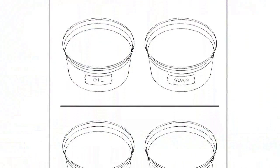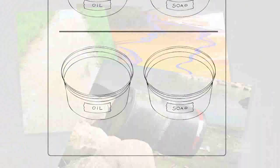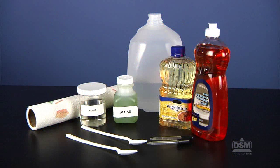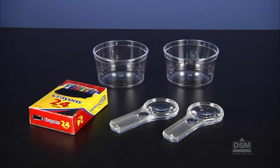To prepare for Session 1, make a copy of Activity Sheet 11 for each student. Cut out pictures of water pollution from magazines and newspapers. Place the containers of daphnia and algae, the bottles of vegetable oil and liquid detergent, two droppers, two spoons, a jug of spring water, and paper towels at a distribution station. Each team will need two plastic dishes, two magnifiers, and some crayons.